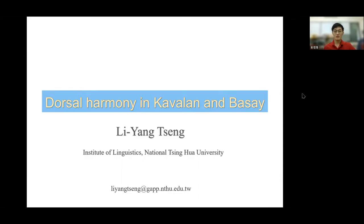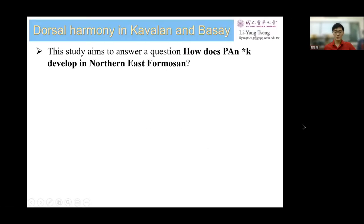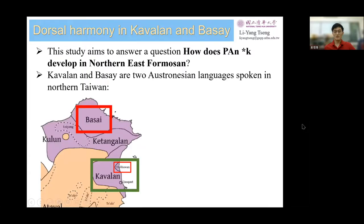Although a vowel is possible to affect the adjacent consonant, it is not always the truth. This study aims to answer a question: how does Proto-Austronesian K develop in Northern East Formosan? The Northern East Formosan languages refer to Kabbalan and Basai, the two Austronesian languages spoken in Northern Taiwan.